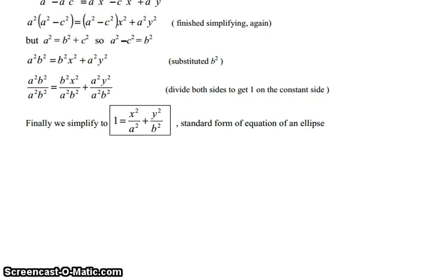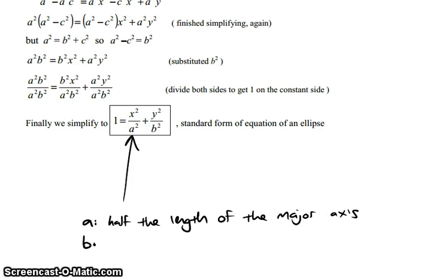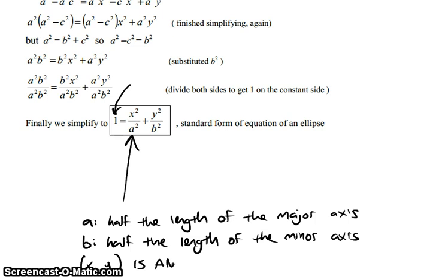After lots of rearranging, we get to a formula. Here it is. That is the formula of an ellipse, where A is half the length of the major axis, and B is half the length of the minor axis. This equation will always be set up to equal 1. You could rearrange things so it wasn't necessarily equal to 1, just like you can rearrange a linear equation so it doesn't look like Y = MX + B, but this is considered the standard, most basic form of an ellipse. And of course, (X,Y) is any point on the ellipse.